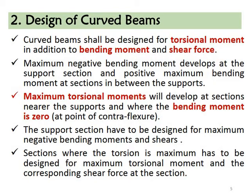This is how we can design. So how can we design? This is how we can make a quick design. We can consider a lot of design cases. If you want to see the bending moment, you can see the torsion moment. The maximum negative bending moment is developed at the support section. The negative bending moment at the support and the positive bending moment are both increased.